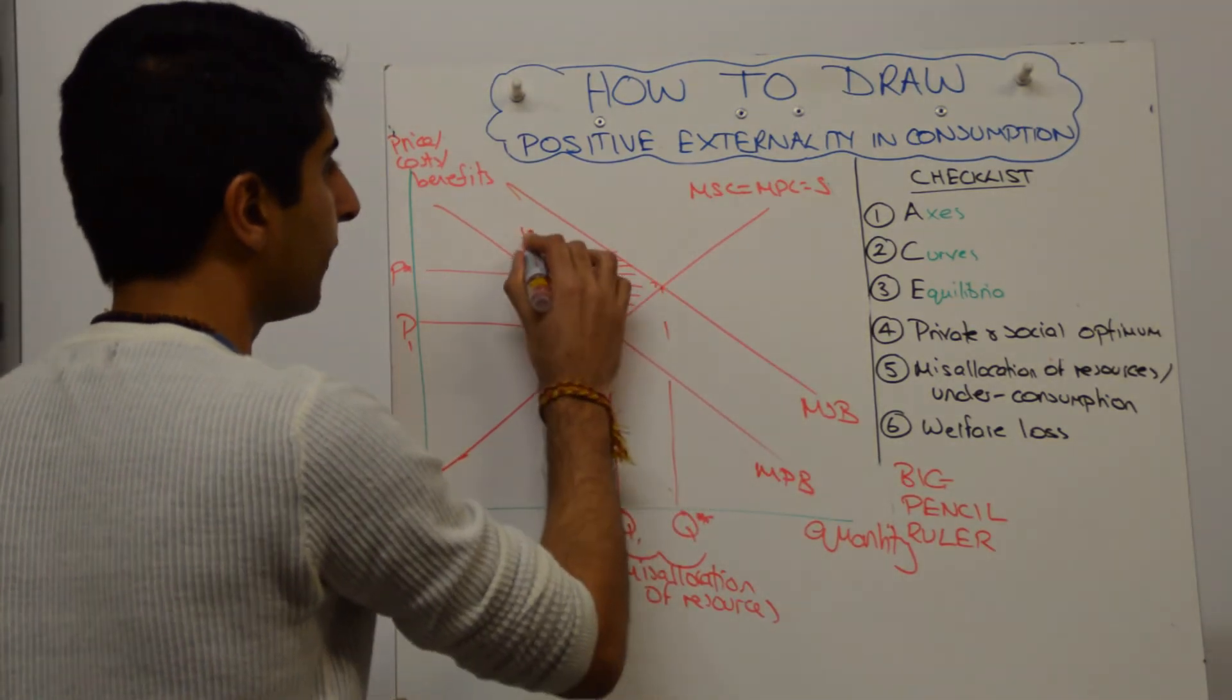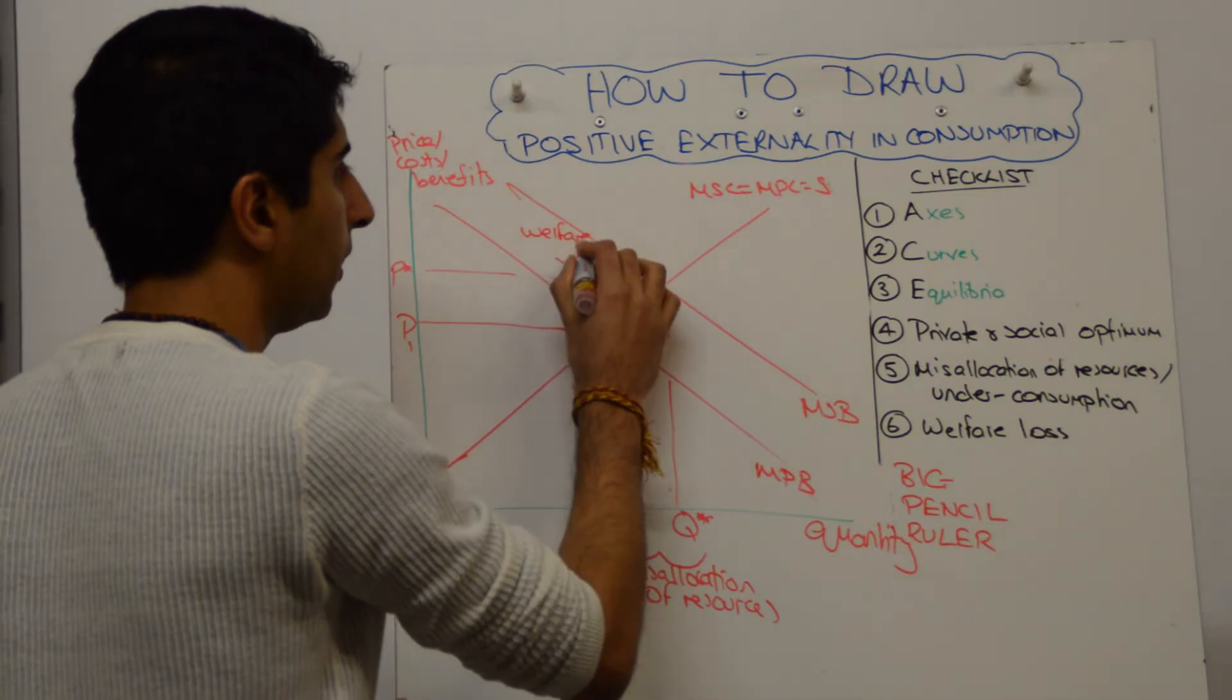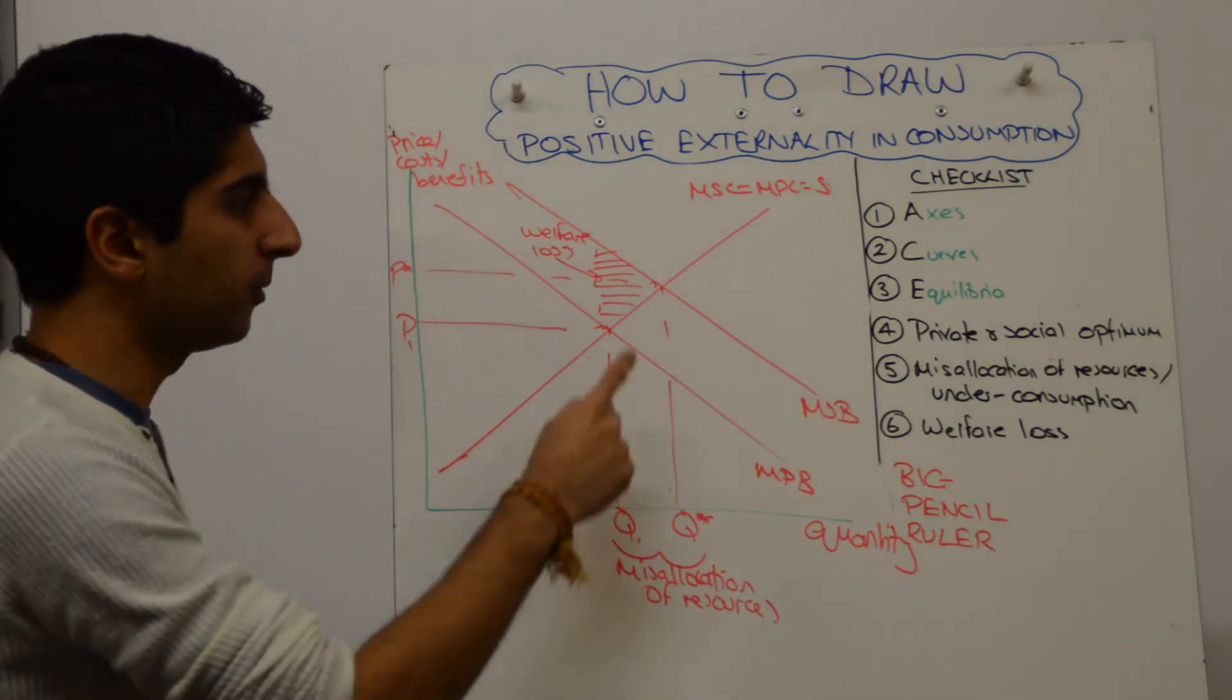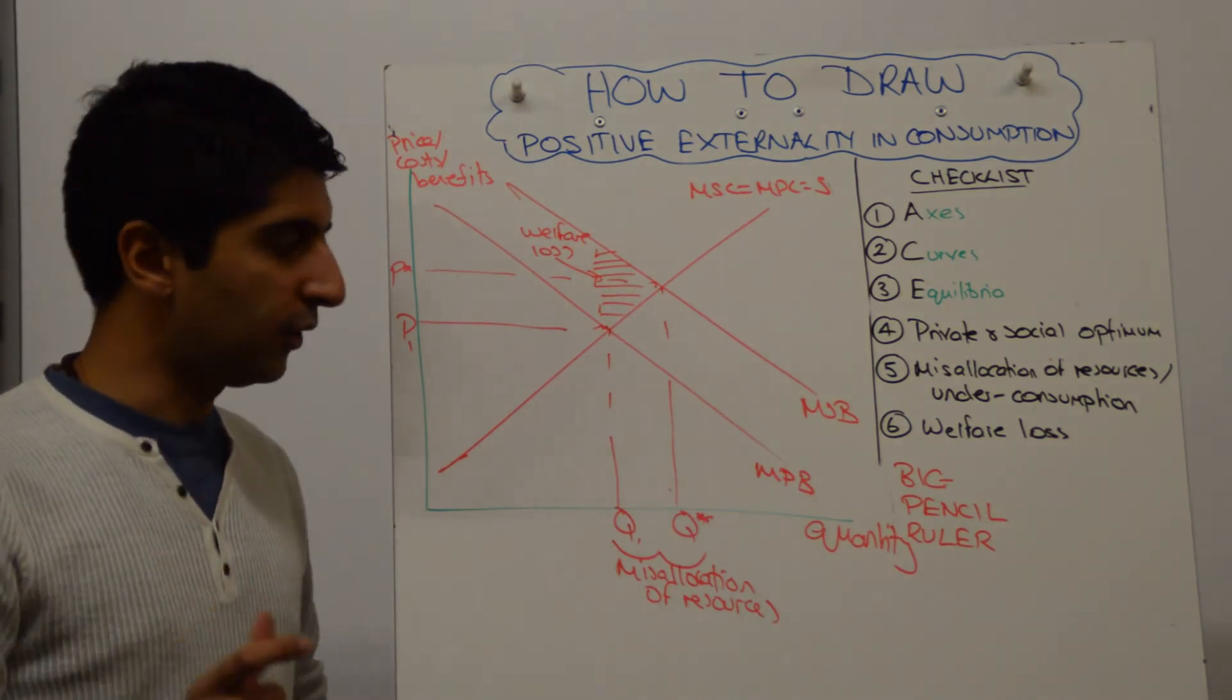There is only ever one triangle that does that. But the trick of it's always the triangle that points towards the social optimum is very, very helpful. Good little tool there.